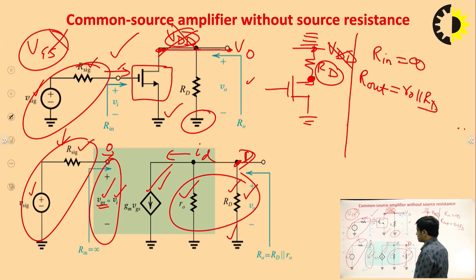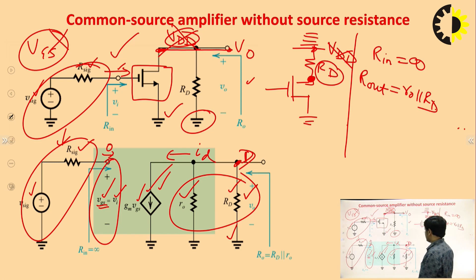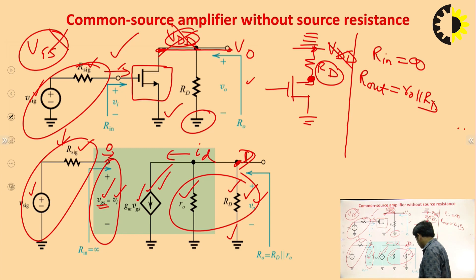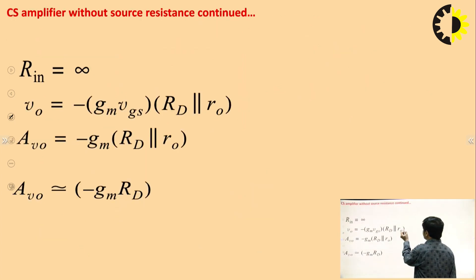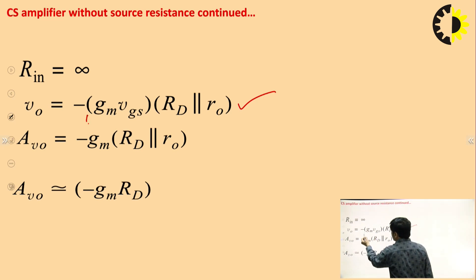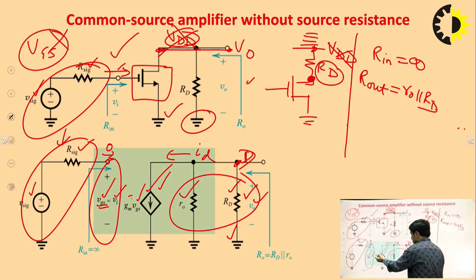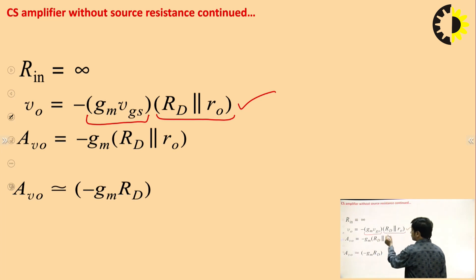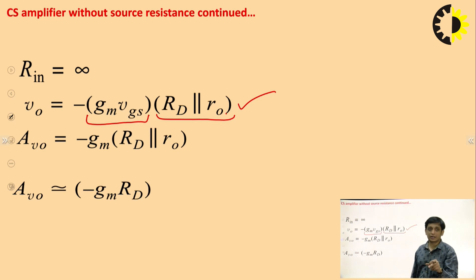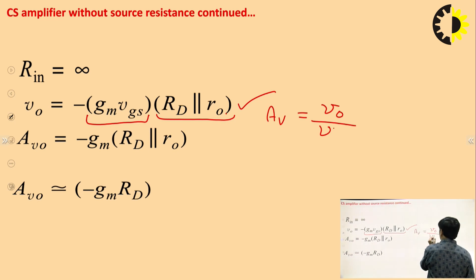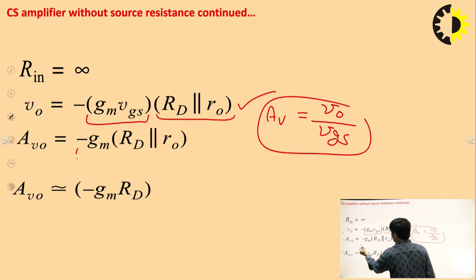To calculate the voltage gain, the current source is gm × Vgs and the output voltage is V0. The voltage gain requires calculating V0 / Vgs. The output voltage V0 equals the current times the total resistance: V0 = −(gm × Vgs) × (Rd || R0), with the negative sign coming from the current direction. Therefore, the voltage gain Av = V0 / Vgs = −gm × (Rd || R0).